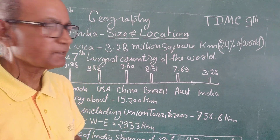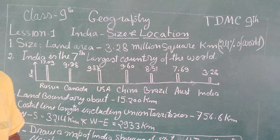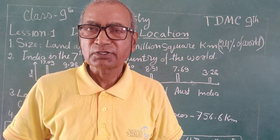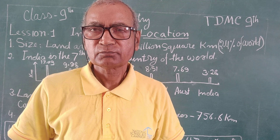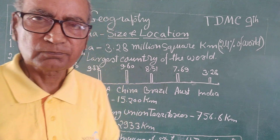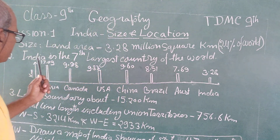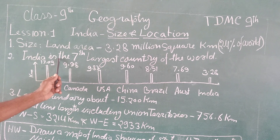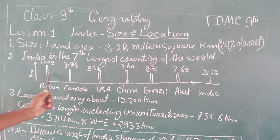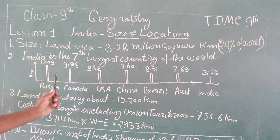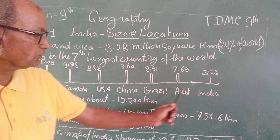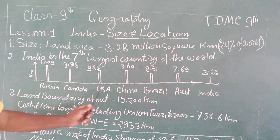India is a vast country. It has a population of about 135 crores, and to manage such a large population is not a matter of joke. You can see the position of India among the big countries of the world. A bar graph has been shown here — the vertical axis shows area in square kilometers and the horizontal line shows the countries. We have 7 countries listed.